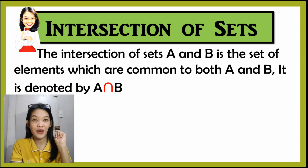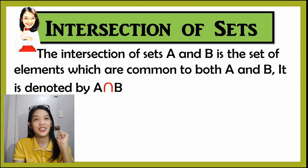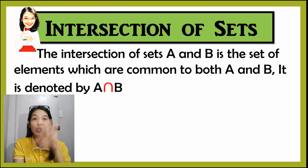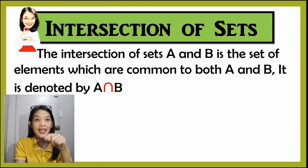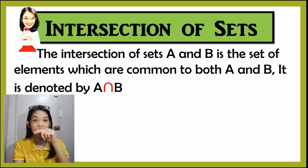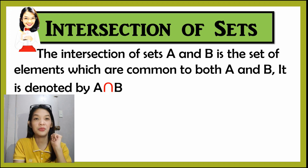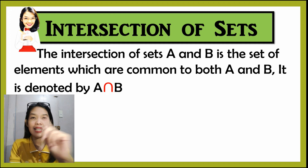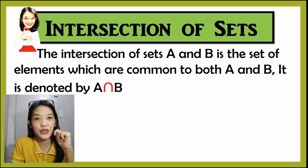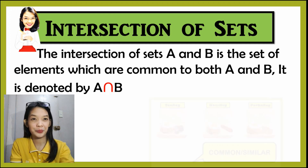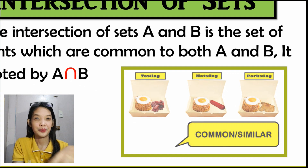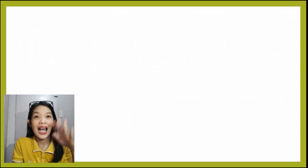Let us define intersection of sets. The intersection of sets A and B is the set of elements which are common to both A and B. It is denoted by A, and the symbol for the intersection, and then B. Now let us relate it to our virtual roleplay a while ago. Let us watch this again and see how the food was being prepared.